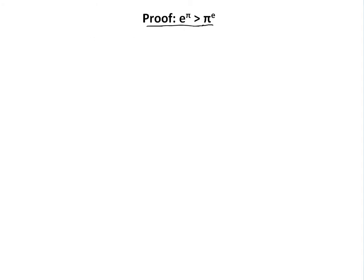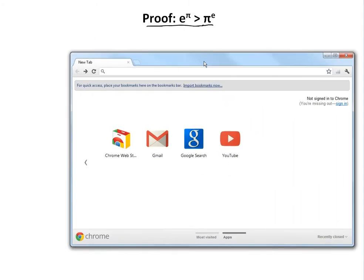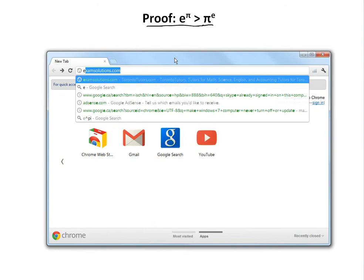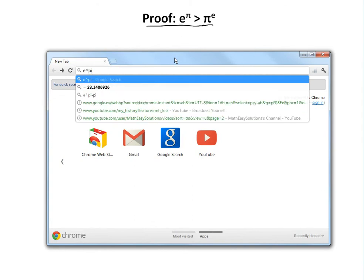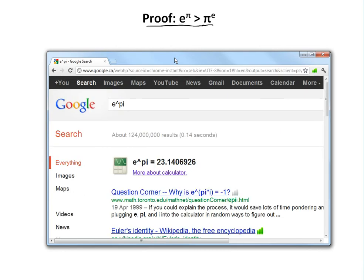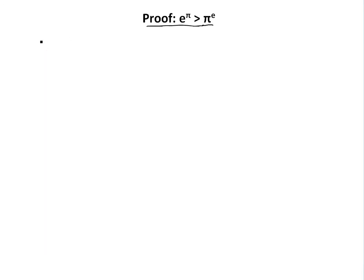We can just check with our calculator — we'll find out what e to the pi is. E to the pi equals 23.14, as you can see at the bottom there.